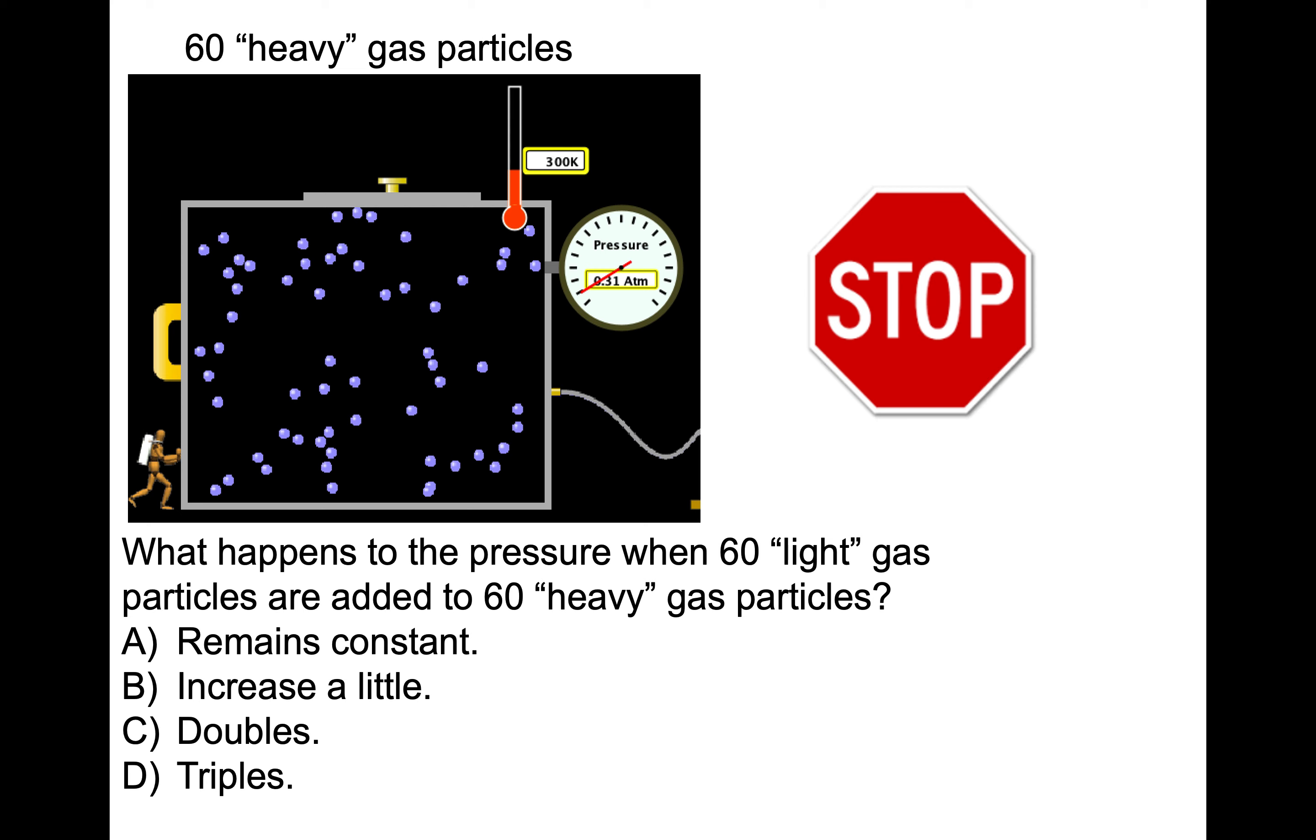One other aspect to consider. Within that simulation, I was adding what were called heavy gas particles. What happens to the pressure when 60 light gas particles are added to the initial 60 heavy ones? What's your prediction and tell me why? When 60 more particles are added but they are light, do you think the total pressure will remain constant, increase a little, double, or triple?